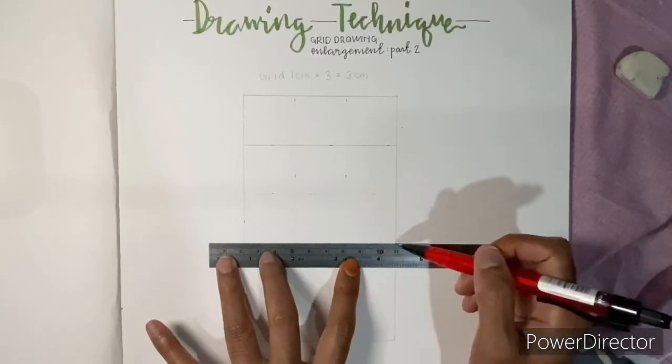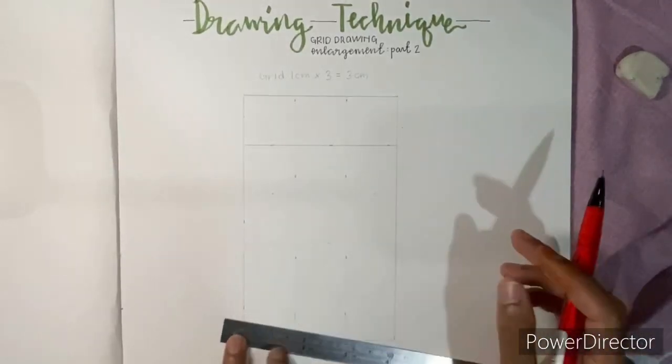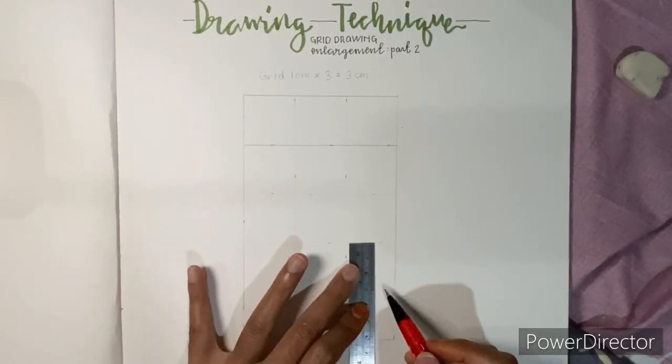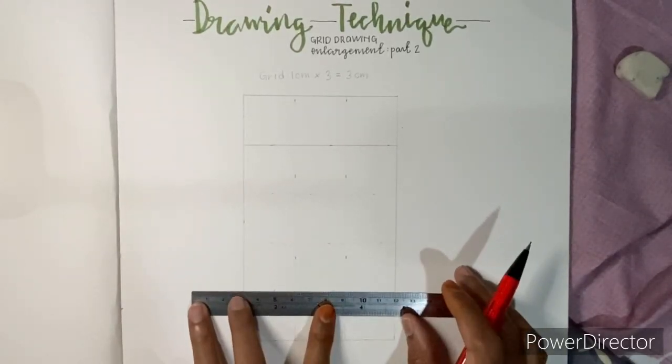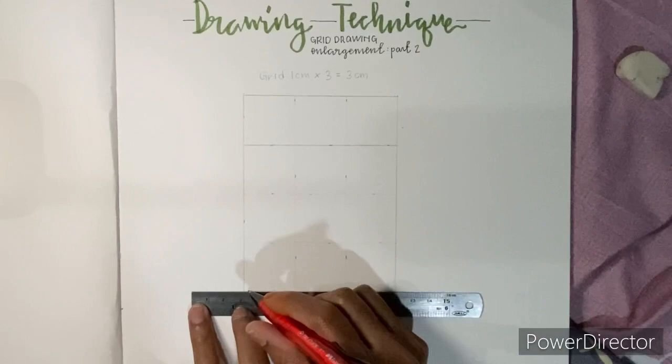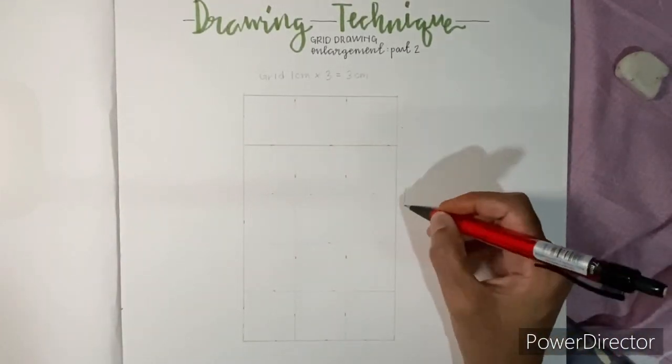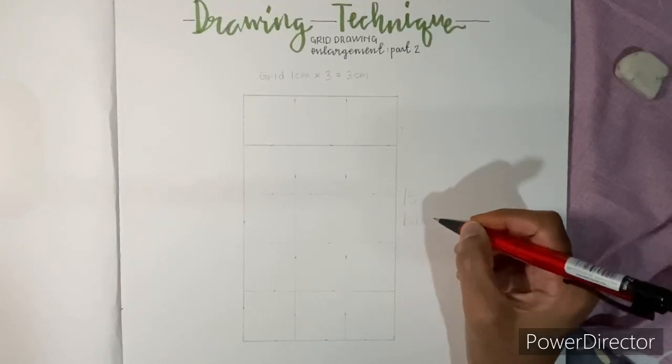As you're drawing the grids, make sure the lines are straight. You are going to get about 15 boxes. Count and check.